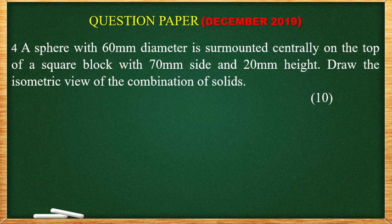We are moving to the fourth question. A sphere with 60 mm diameter is surmounted centrally on the top of a square block with 70 mm side and 20 mm height. Draw the isometric view of the combination of the solids.